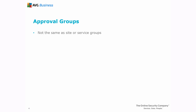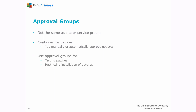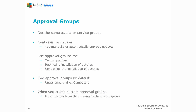Next, we'll set up Patch Approvals. Note that Approval Groups are not the same as Site or Service Groups. An Approval Group is a container for devices which you manually or automatically approve updates. You will use Approval Groups for testing patches, restricting installation of patches, and controlling the installation of patches. By default, there are two Approval Groups: Unassigned and All Computers. When you create custom Approval Groups, you move devices from the Unassigned Group to the Custom Group.